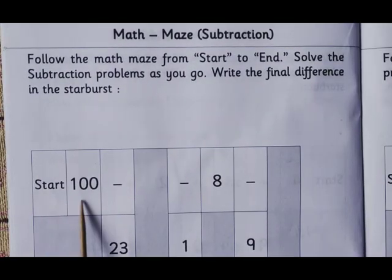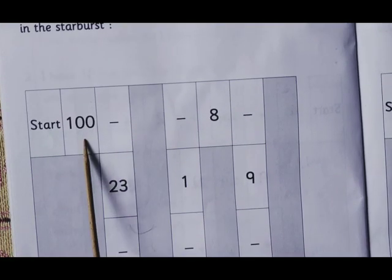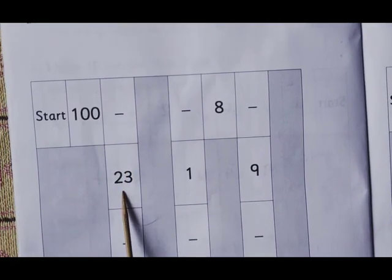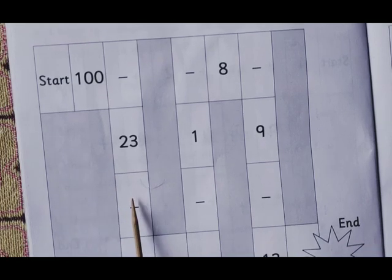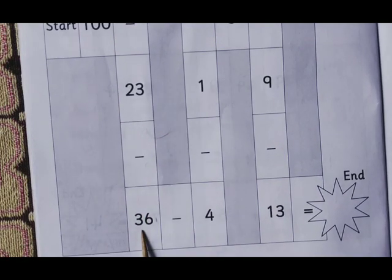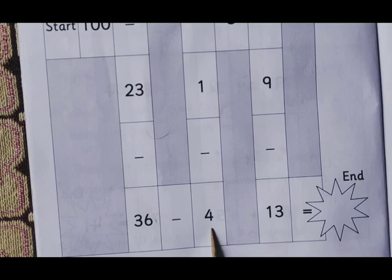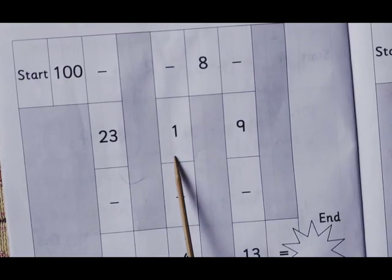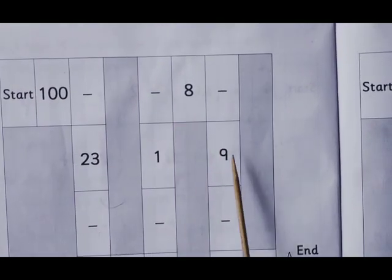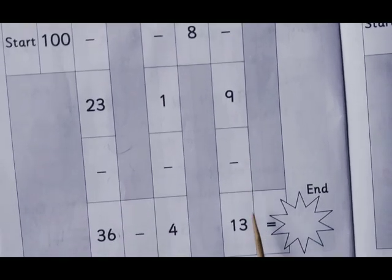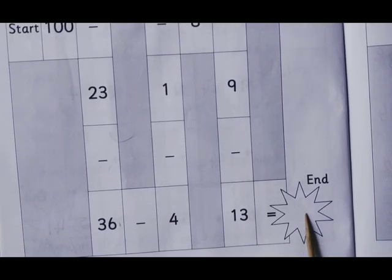You have to start from here. First, 100 minus 23. Then whatever the answer you get, from that you have to subtract 36. Then afterwards minus 4, then 1, then 8, then 9, and then 13. And finally write the answer in the starburst.